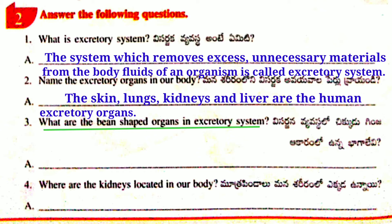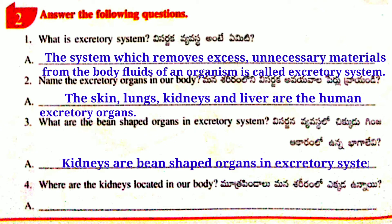Answer: Kidneys are bean-shaped organs in the excretory system. Fourth Question: Where are the kidneys located in our body?